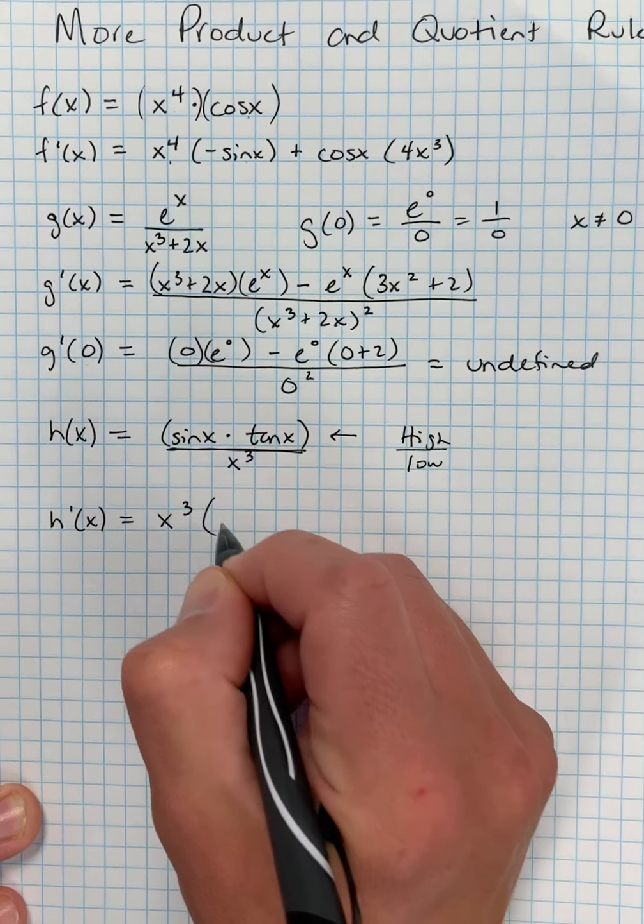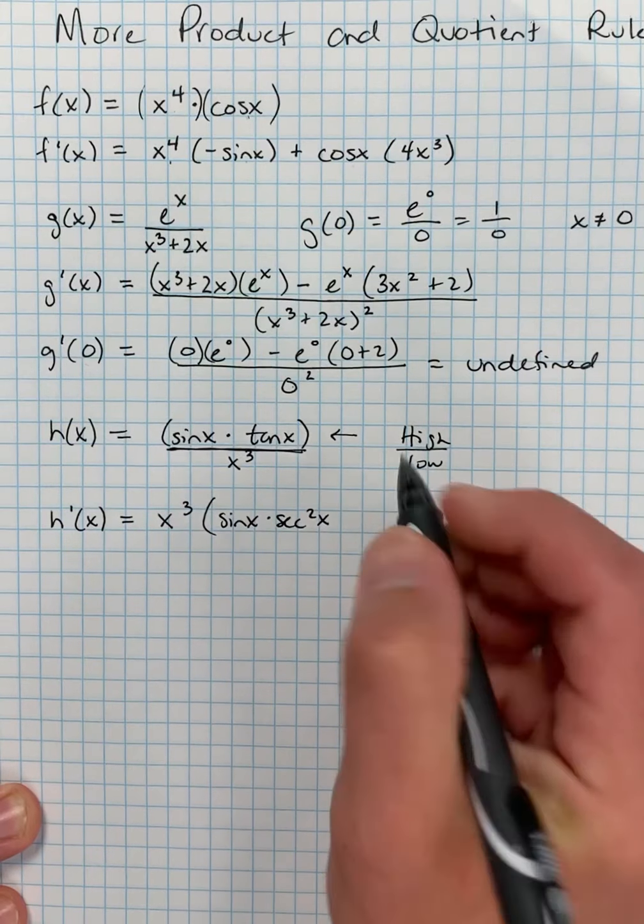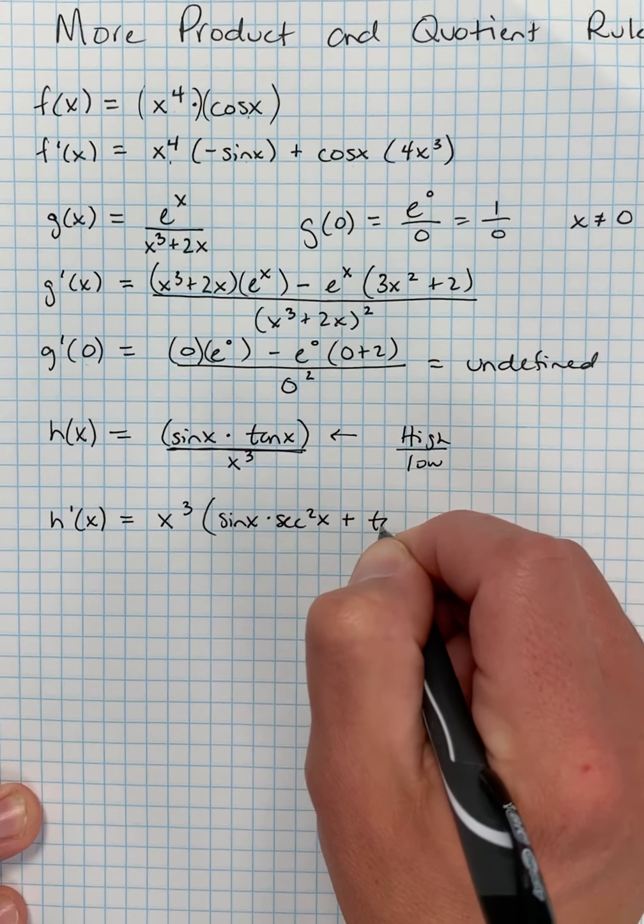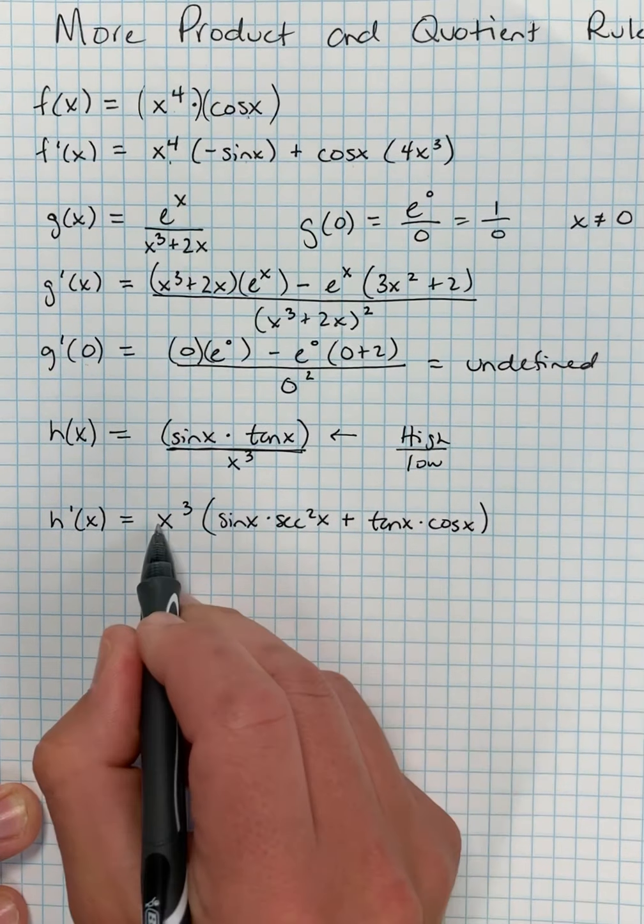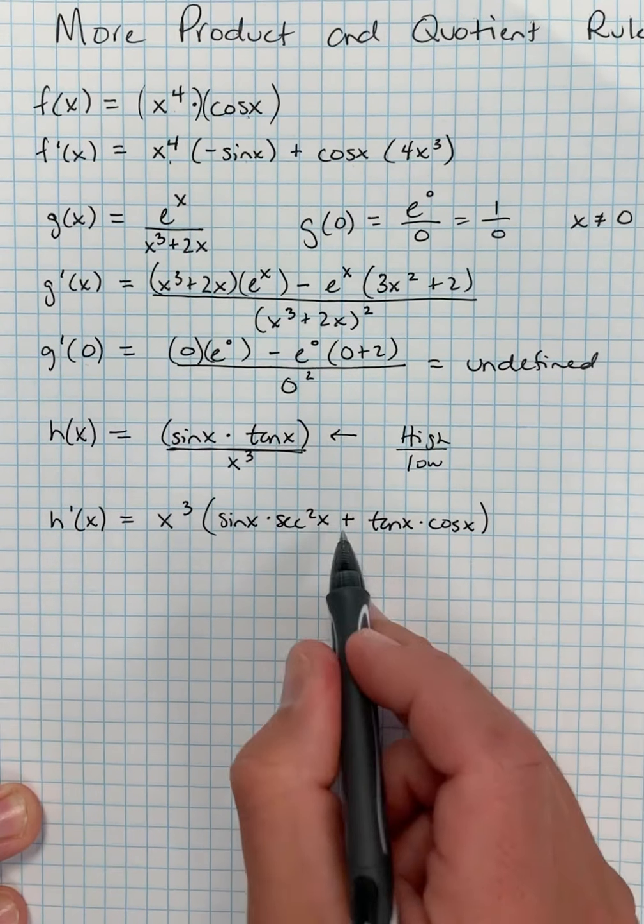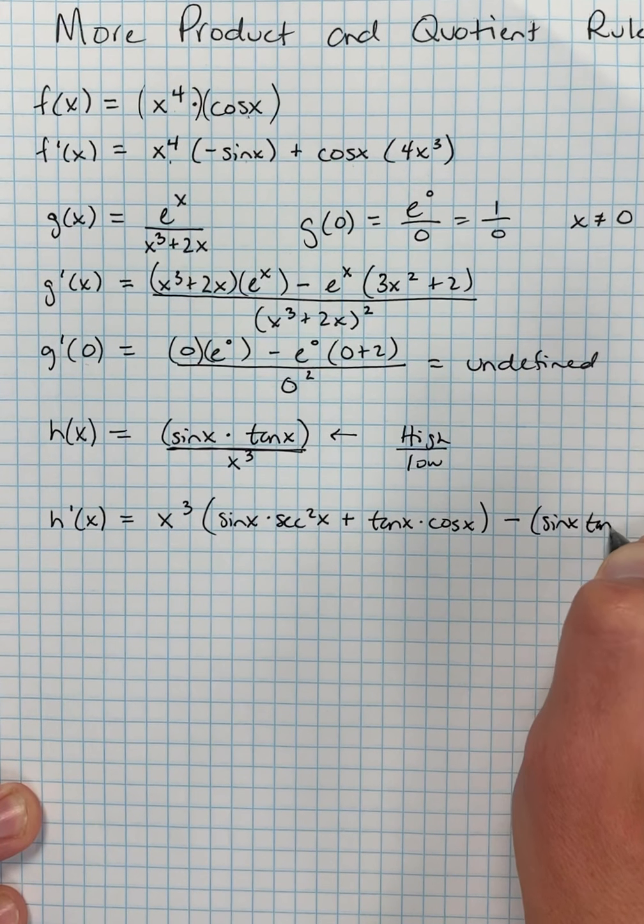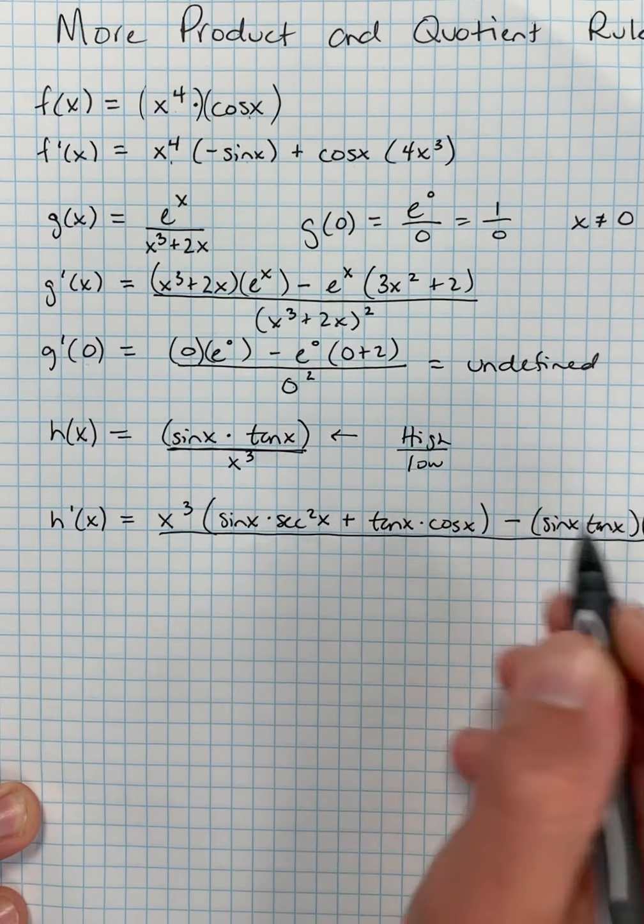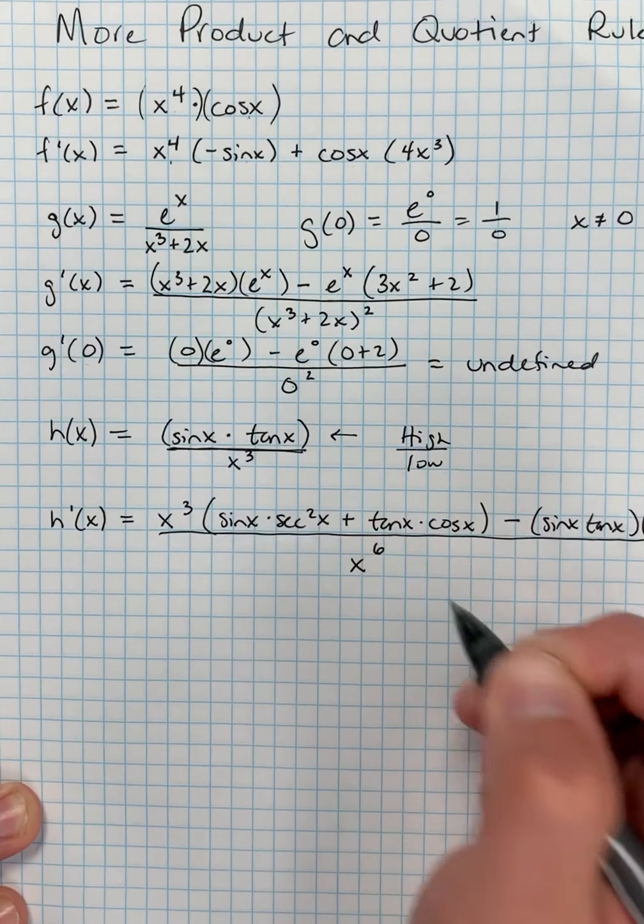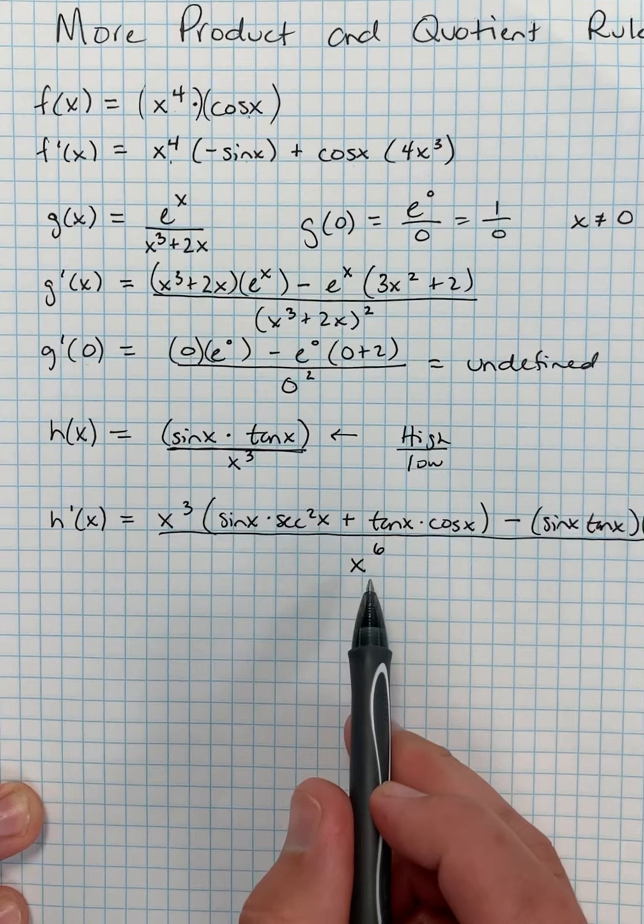I'm going to take the derivative of that using the product rule. So low, d high, this is going to be 1, d2, secant squared x, plus 2, tangent x, d1, which is cosine x. So back to my quotient rule, I have low, d high, minus high, d low, running off the page, all over the square of what's below.